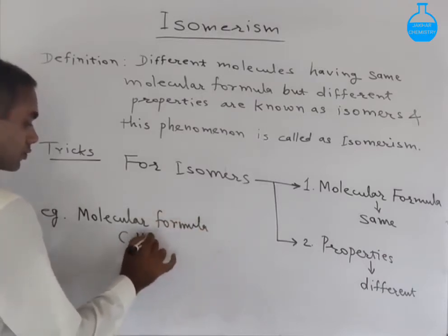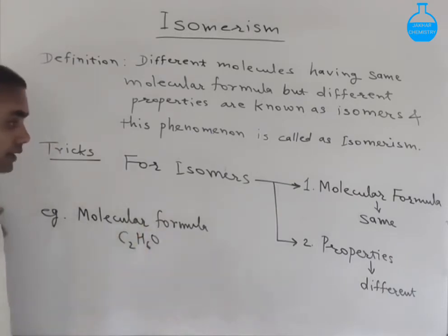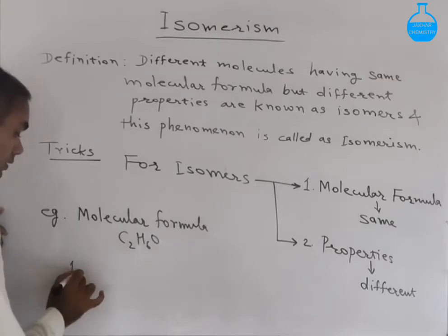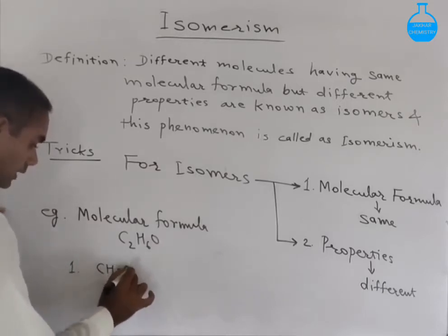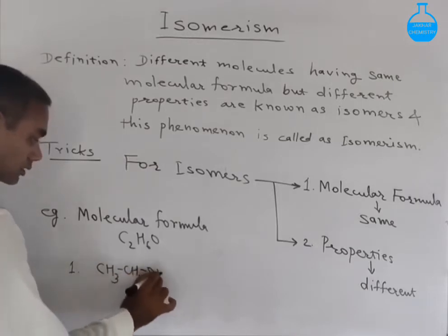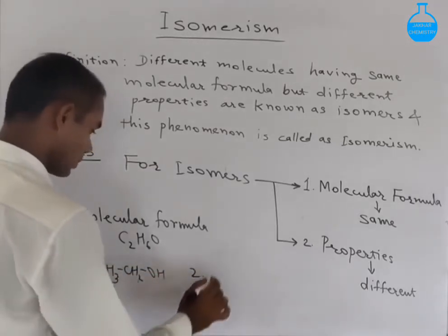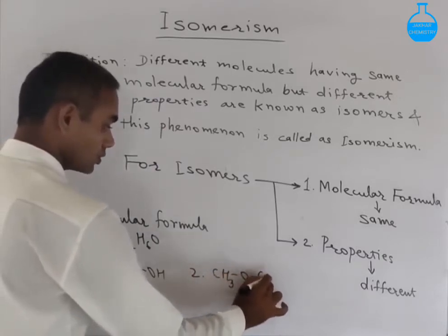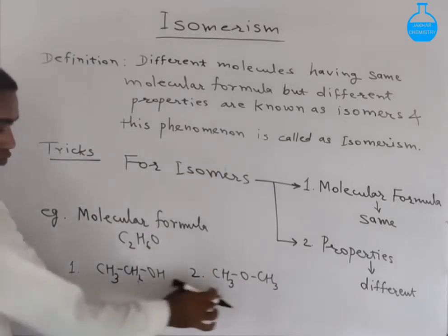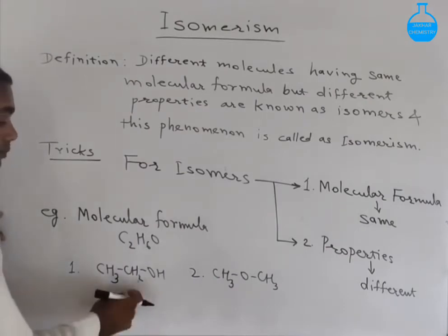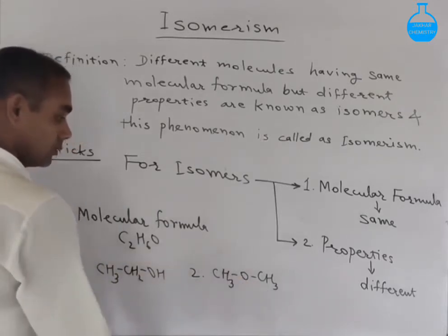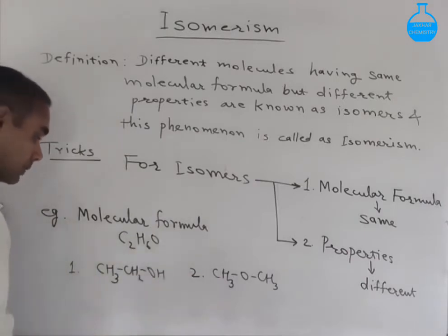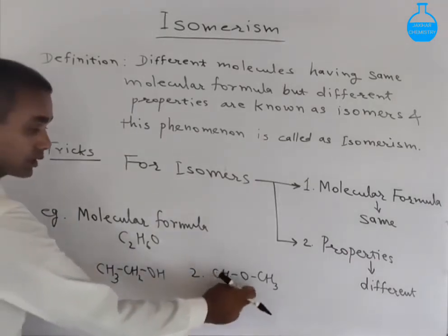Now we are taking an example. Suppose we have a molecular formula C₂H₆O. We want to determine whether it can show isomers or not. We are trying structural formulas for this molecular formula. One structure is CH₃CH₂OH (ethanol), and another structural formula can be CH₃OCH₃ (dimethyl ether). You can see these two molecules are different but the molecular formula is similar. In the case of the ethanol molecule, it can form a hydrogen bond with another ethanol molecule.